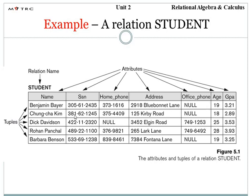Every row has values. How many attributes are there? We have 7 attributes and every 7 attributes have 5 rows. Every row is made up of 7 values. So tuple T1 has values V1, V2, V3, V4, V5, V6, and V7. Similarly, all 5 tuples are made up of values V1 to V7, and these values are based on the domain of the attribute. This is the complete example of the student relation.